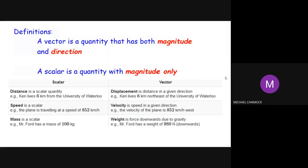So we started off on a lighter note, but some of what was just mentioned is absolutely correct. A vector is a quantity that has both a magnitude and direction. So if it only has magnitude, then it's referred to as a scalar.